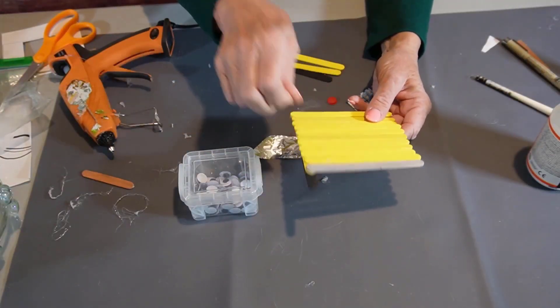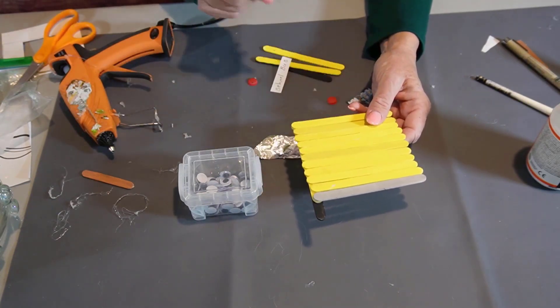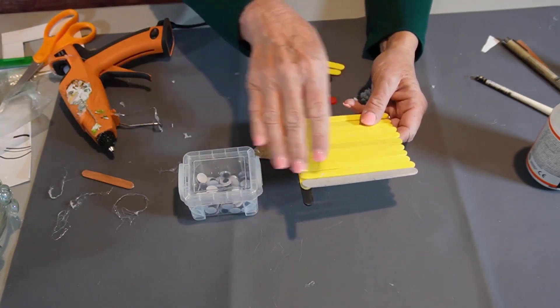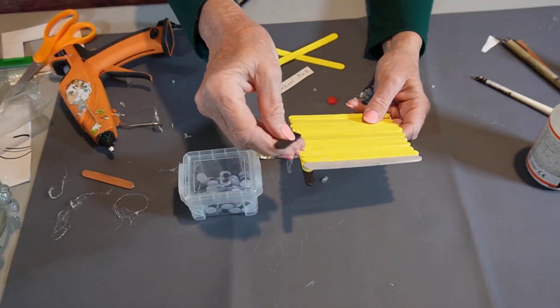So I have painted 11 popsicle sticks yellow, the regular size ones, one gray and two smaller ones black.